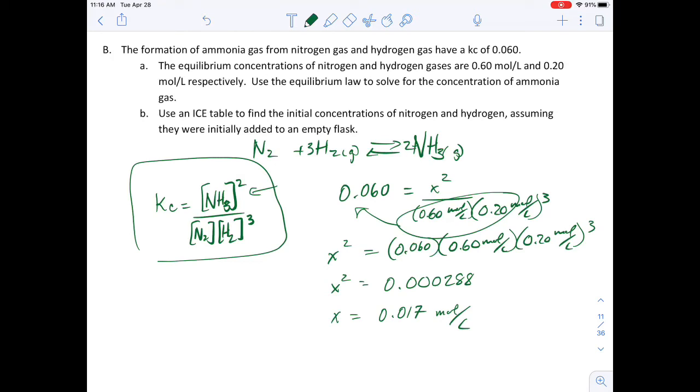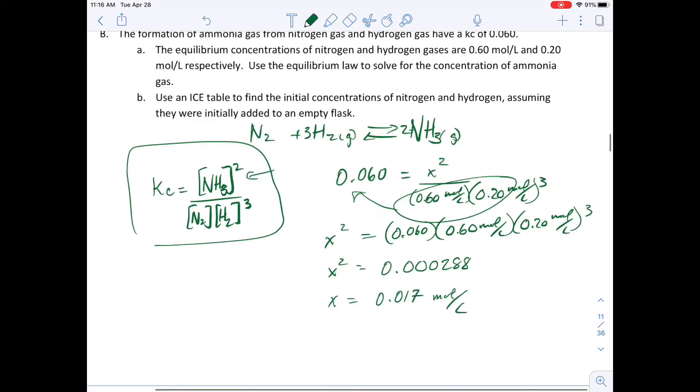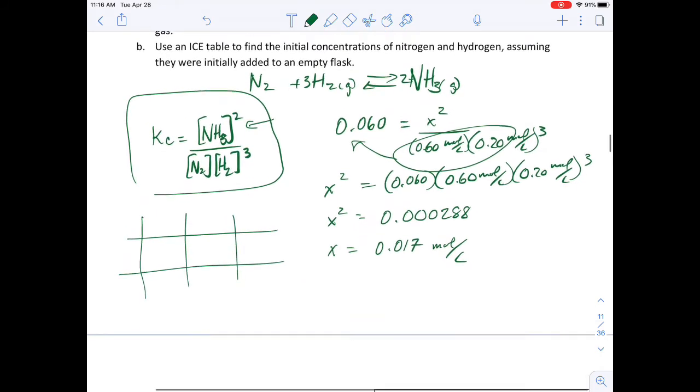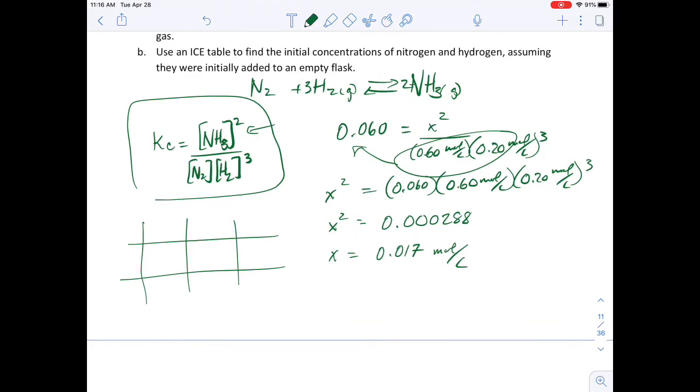So now I can calculate what the—I could use an equilibrium law to find out how much of each, or the ICE table to calculate the amount of each chemical. So this is a bit of a weird and screwy question, but a kind of a neat question too. So we've got this situation here.